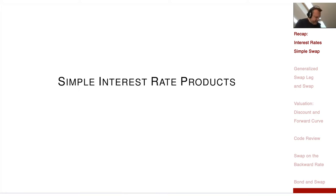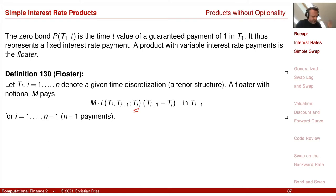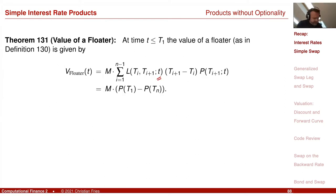Then we started looking at interest rate products. What was the value of paying the floating rate — so paying the forward rate? The forward rate is fixed at the beginning of the period, so it's not known today. We found out that the value actually corresponds to paying today's forward rate at the payment time. The payment time was in the zero-coupon bond the end of the corresponding period.